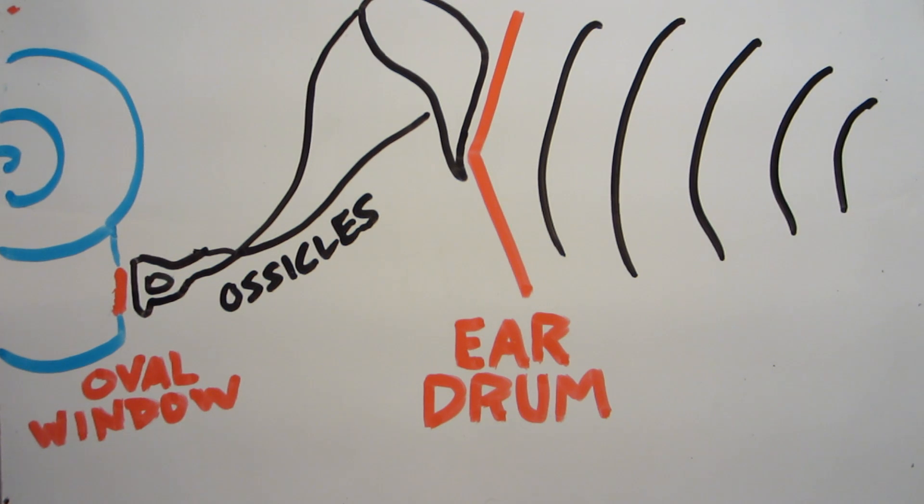Now, the ossicles aren't entirely passive middlemen in this situation. There are actually some little muscles which can tighten to damp their movement. These muscles act like an automatic volume control system. They contract when you're chewing or talking to reduce the sensitivity of your ears. Many people can activate them voluntarily, and you'll hear a sort of low, rumbling sound.